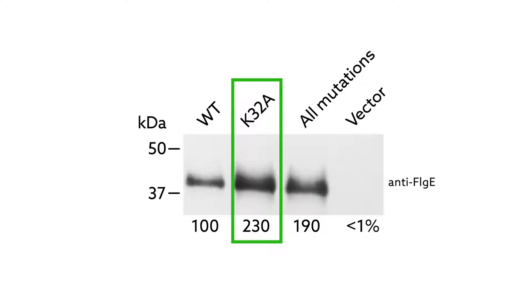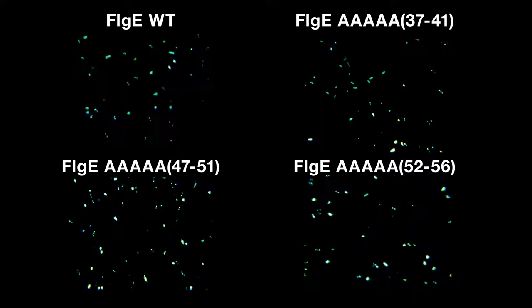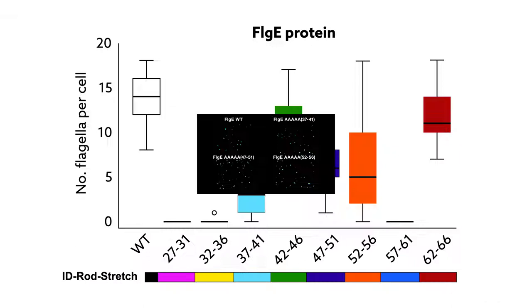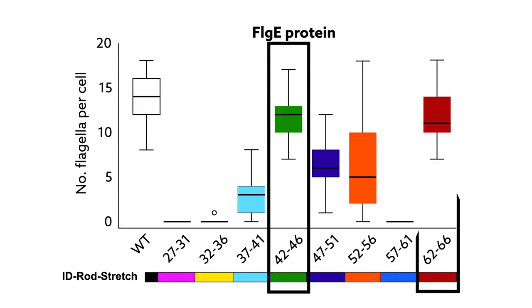To discover other possible functions of the hook protein, the team then mutated residues in a 5-amino acid sliding window. This revealed the importance of many sections of ID Rod Stretch, except for the middle and very C terminal end.